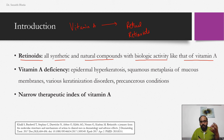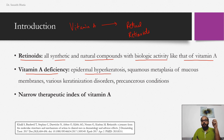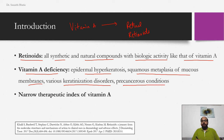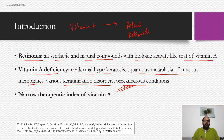Many decades ago it was found that patients suffering from vitamin A deficiency had epidermal hyperkeratosis, squamous metaplasia of mucous membranes, various keratinization disorders, and certain precancerous conditions. From these observations it was established that vitamin A is essential for proper keratinization and epidermal turnover. Vitamin A deficiency can lead to disorders of epidermal keratinization and even precancerous conditions.